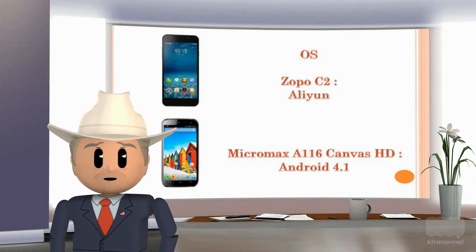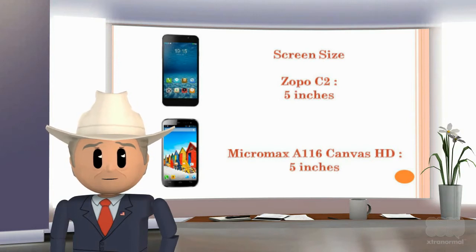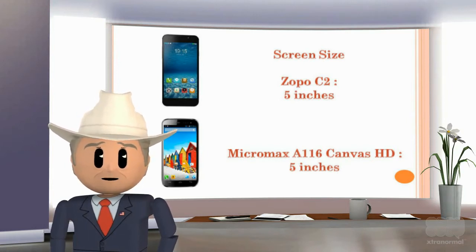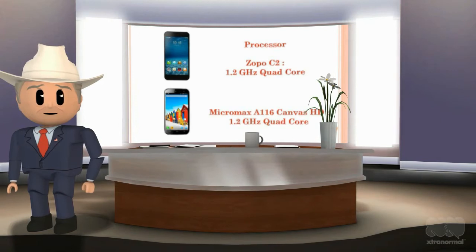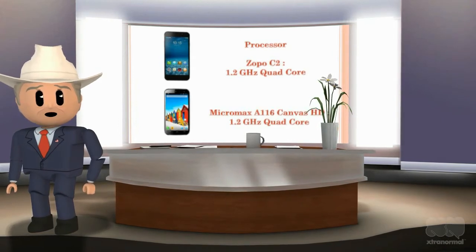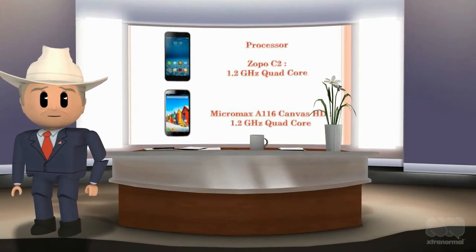The OS of the Zopo C2 is AlliUnion OS, while the OS of the Micromax A116 Canvas HD is Android 4.1. Screen size of both the Zopo C2 and the Micromax A116 Canvas HD is 5 inches. Processor of both devices is 1.2 GHz quad-core.